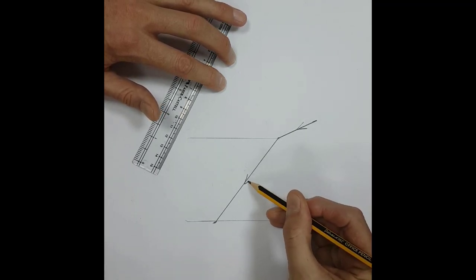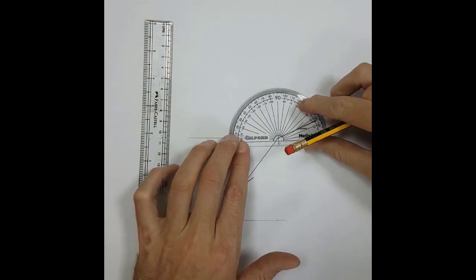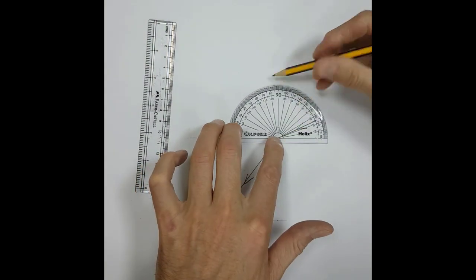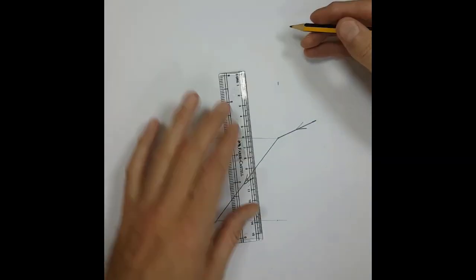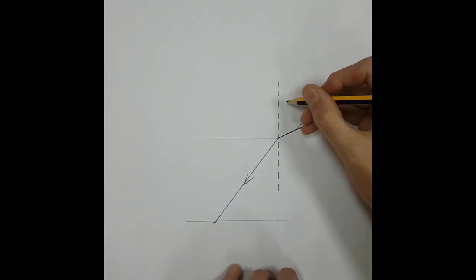I get my protractor out, I measure the 90 degrees, get the ruler, draw the dotted line passing through the point where it enters, and there's my normal. This angle here is the angle of incidence and this angle here is the angle of refraction.